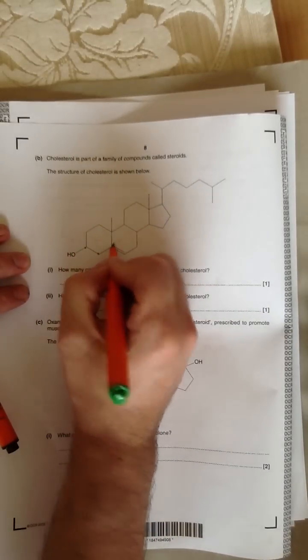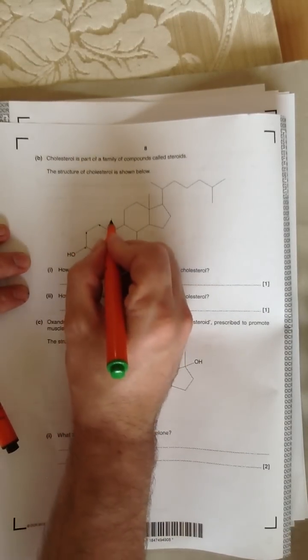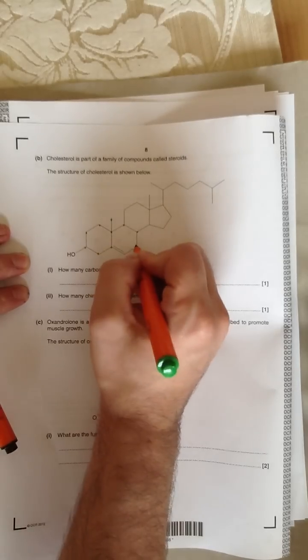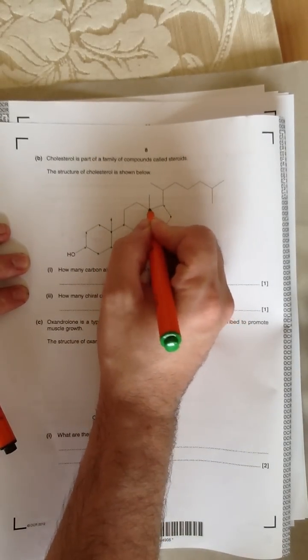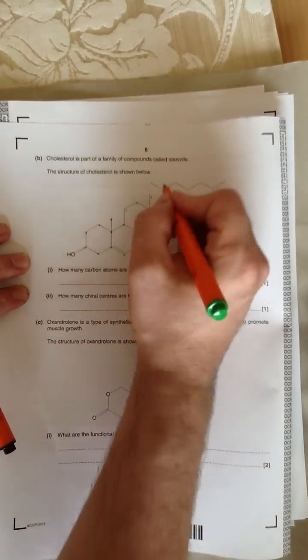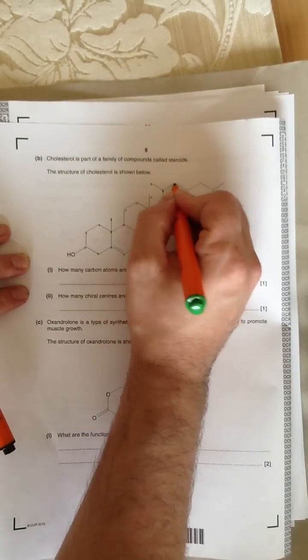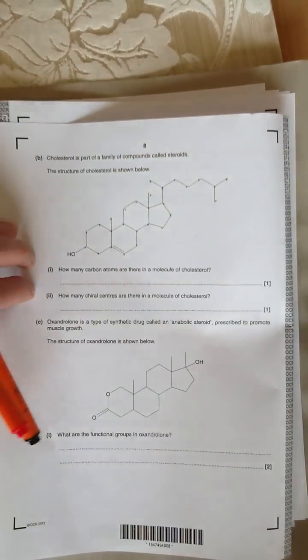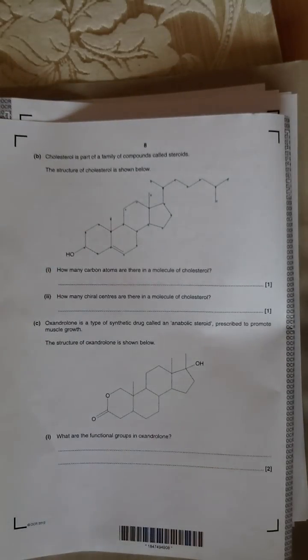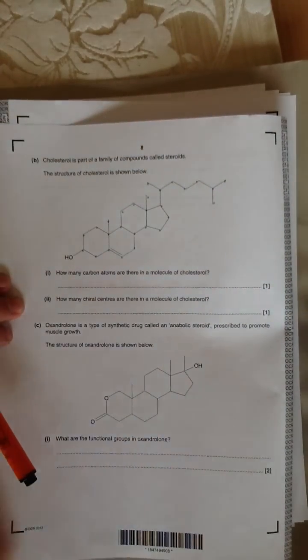So we have 1, 2, 3, 4, 5, 6, 7, 8, 9, 10, 11, 12, 13, 14, 15, 16, 17, 18, 19, 20, 21, 22, 23, 24, 25, 26, 27. And by doing a little dot it means I can make sure I've counted them all up. Why don't I do a big dot?